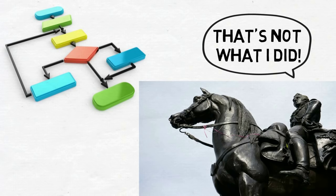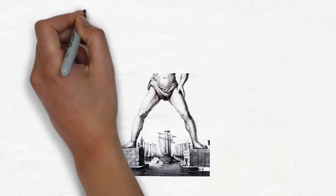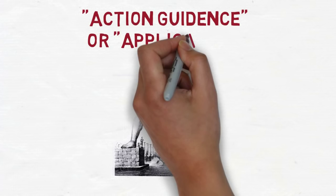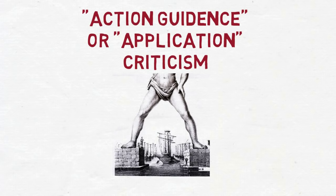This objection, often called either the action guidance or the application criticism, rests on two premises. Firstly, that a character-based meta-ethic cannot tell us what to do, and secondly, that a good meta-ethic must tell us what to do.